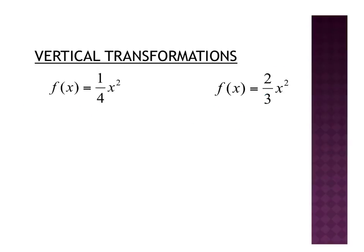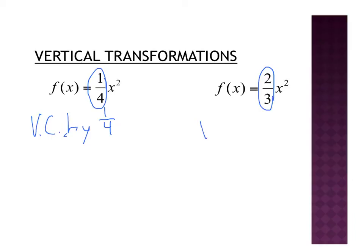Here we have a couple more vertical transformations. Out in front of this one we have 1 fourth. This is still vertical because it's not the part being squared — that 1 fourth is not being squared. So I have a vertical compression by a factor of 1 fourth. Remember, when it's between 0 and 1, it's a compression; when it's greater than 1, it's a stretch. So for 2 thirds out in front, we have a vertical compression by a factor of 2 thirds.